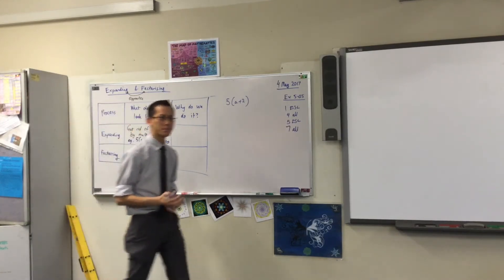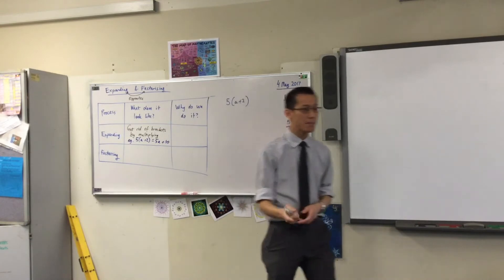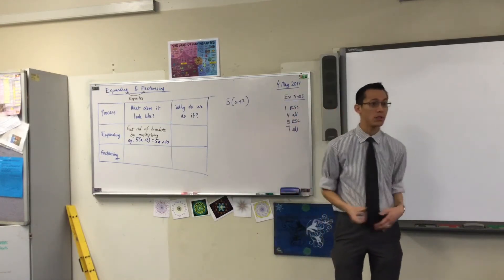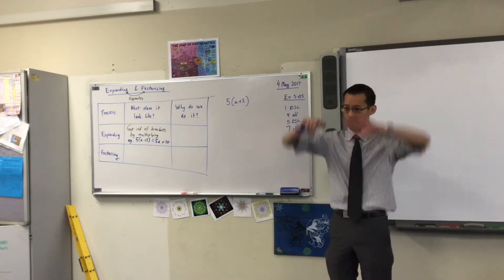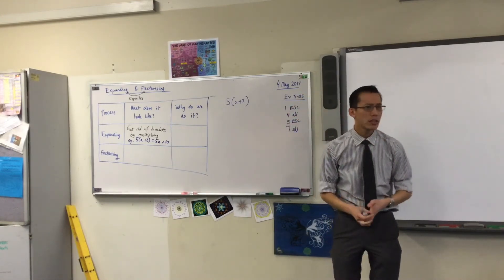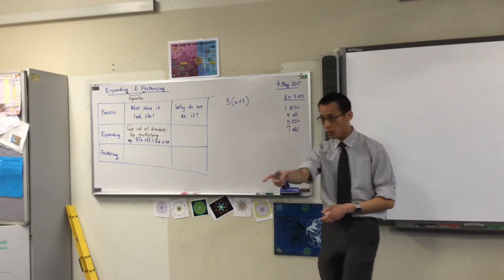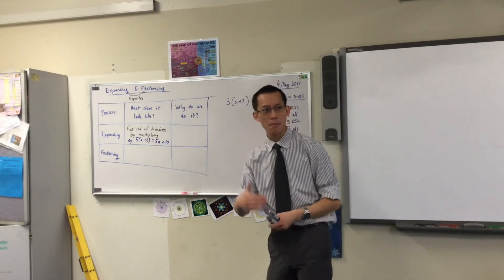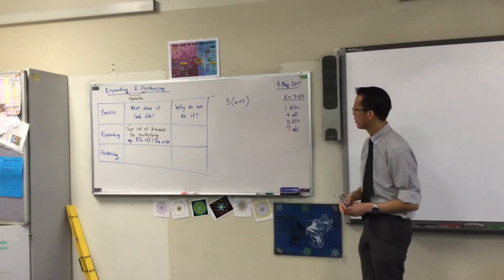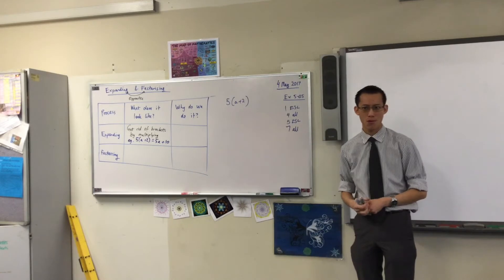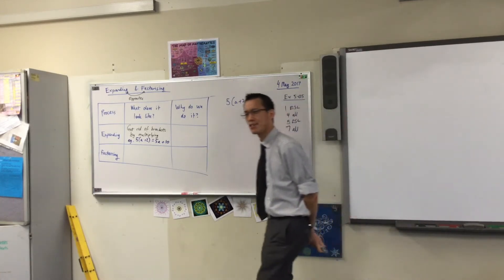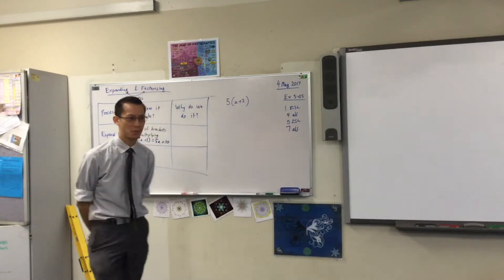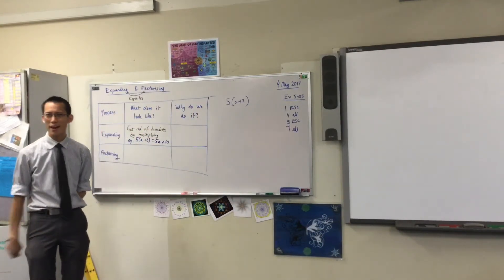For example, the 5 and the 2, in what way did you combine them? You multiply them. So, get rid of brackets by multiplying. That's what it looks like. Why do we do it? Why is this useful? Think back even to question 1 in the review that you did today. You did some expanding. You did it twice, in fact, on top of those fractions. Why did you do it?